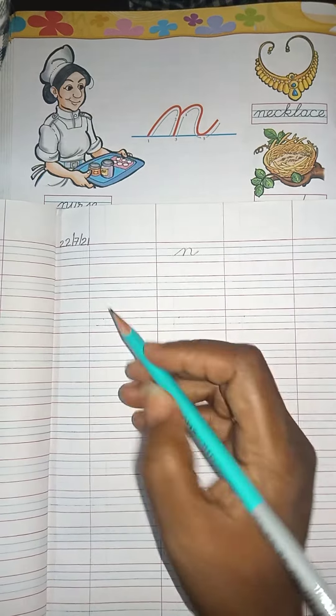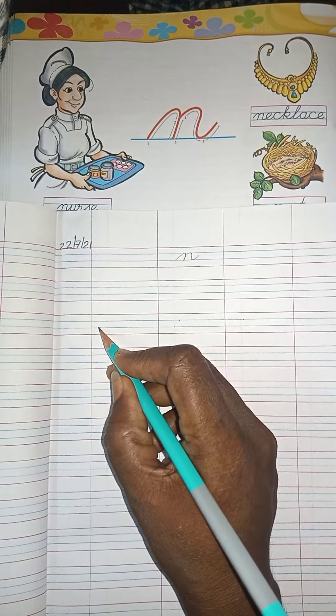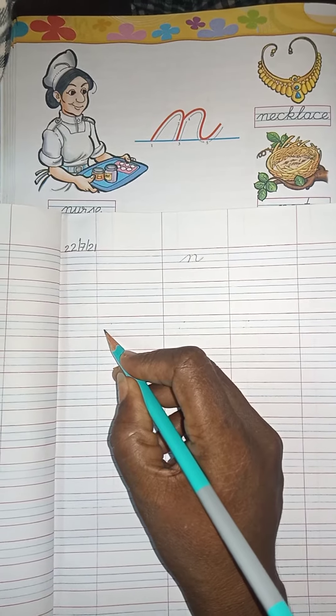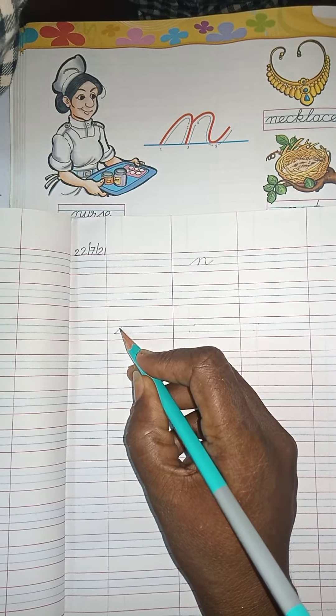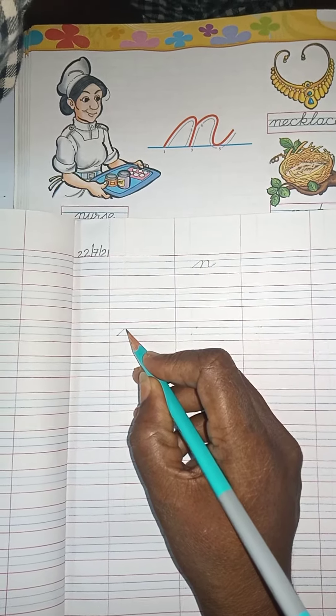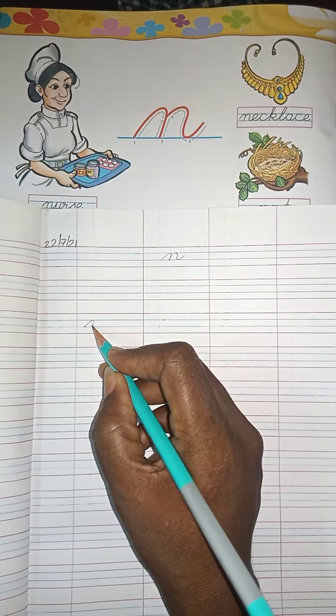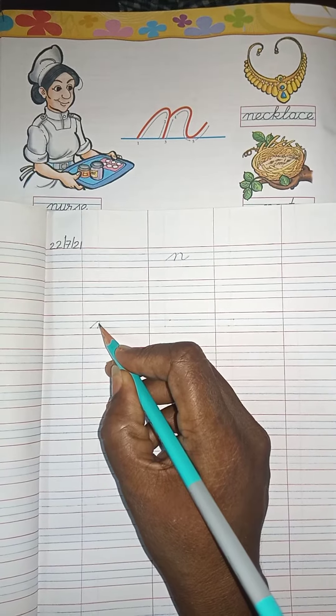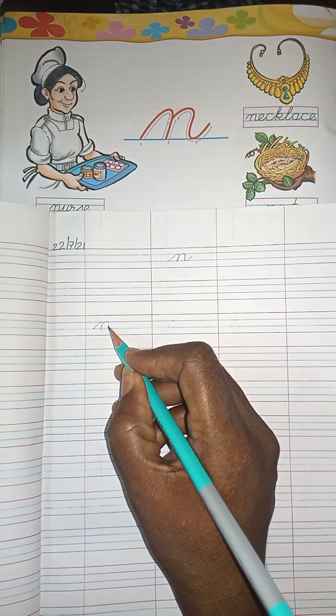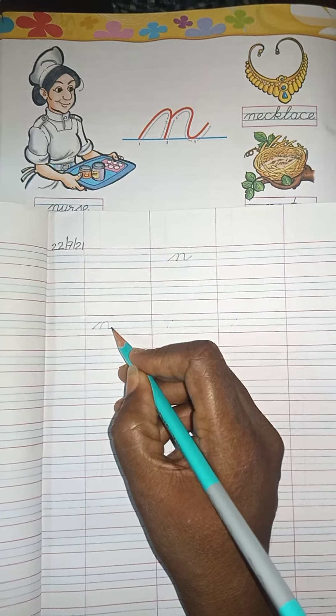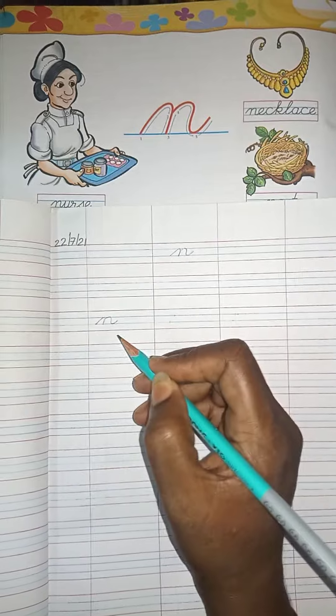So let's start. Put your pencil on the below blue line, then make a slanting line touching the above blue line. Come down, again go up, then come down, then make a small curve.